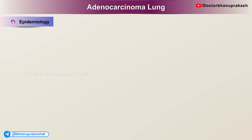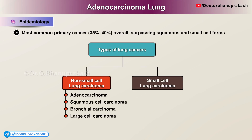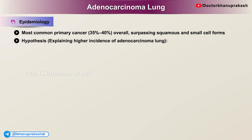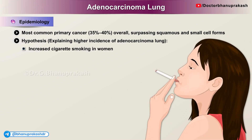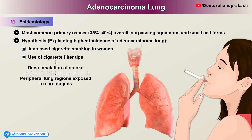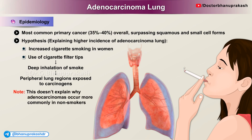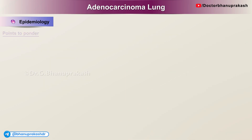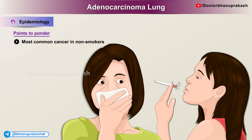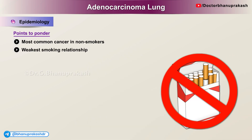Epidemiology: Adenocarcinoma is the most common primary lung cancer, accounting for 35–40% overall, surpassing the squamous cell and small cell forms. Two hypotheses explain why its incidence is rising: cigarette smoking has increased in women, and the use of cigarette filter tips causes smokers to inhale more deeply, exposing peripheral lung regions to carcinogens. Note this doesn't explain why adenocarcinomas occur more commonly in non-smokers. It is the most common lung cancer in non-smokers and has the weakest smoking relationship.